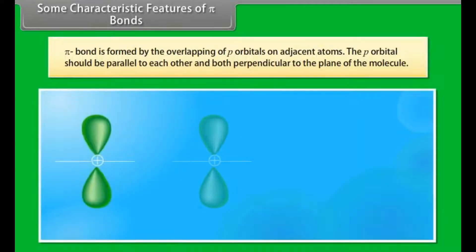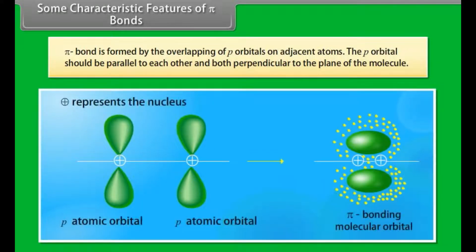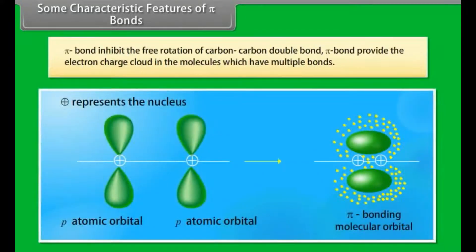Some characteristic features of pi bonds: pi bond is formed by the overlapping of p orbitals on adjacent atoms. The p orbitals should be parallel to each other and both perpendicular to the plane of the molecule. Pi bond inhibits the free rotation of carbon-carbon double bond. Pi bond provides the electron charge cloud in molecules which have multiple bonds.